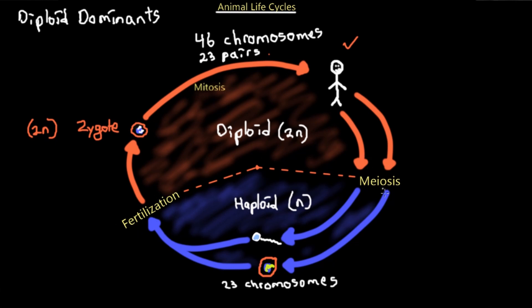Before fertilization and after meiosis is the haploid stage, which is a very tiny, small stage of the animal life cycle. This is why we are diploid dominant.